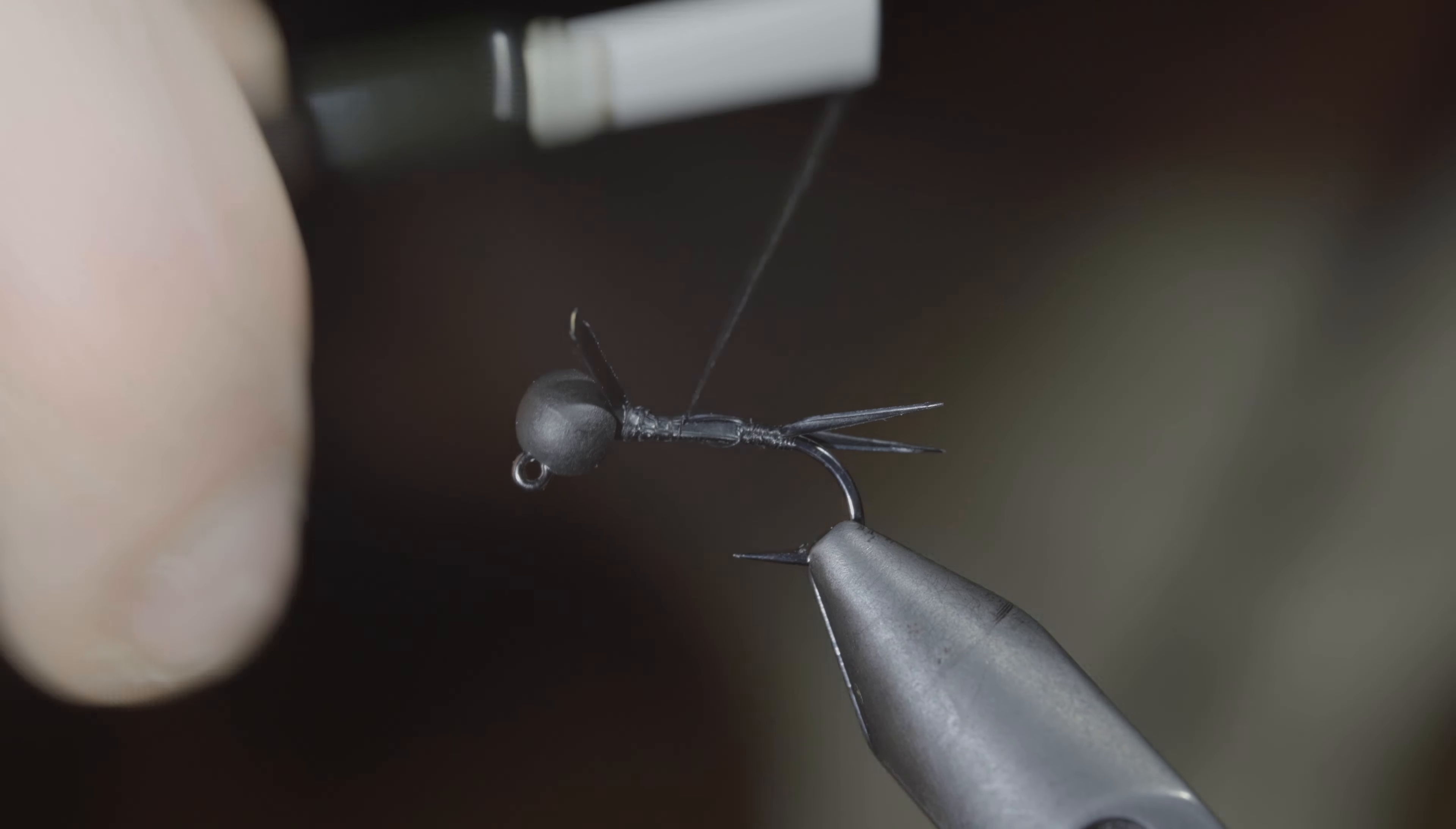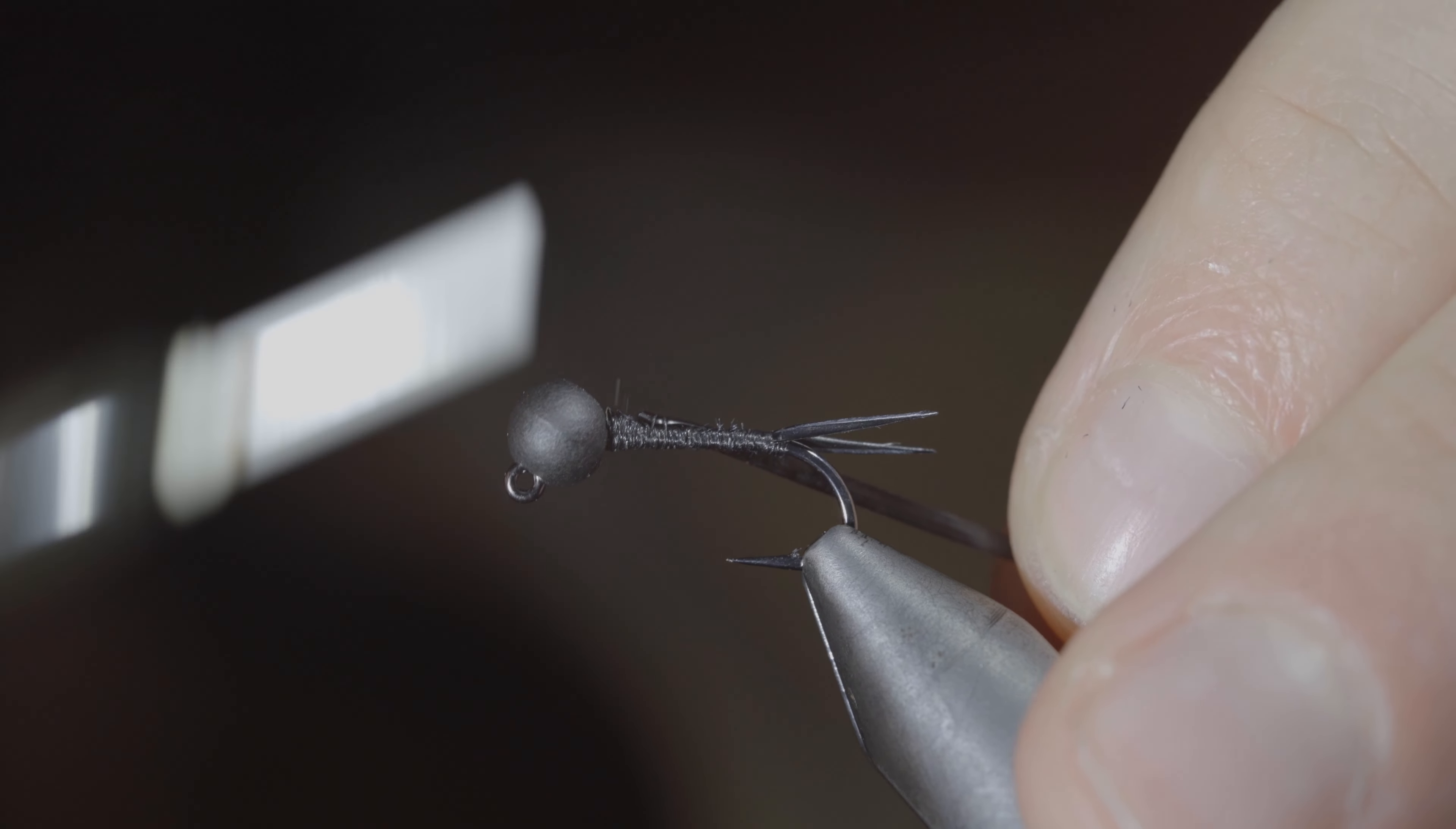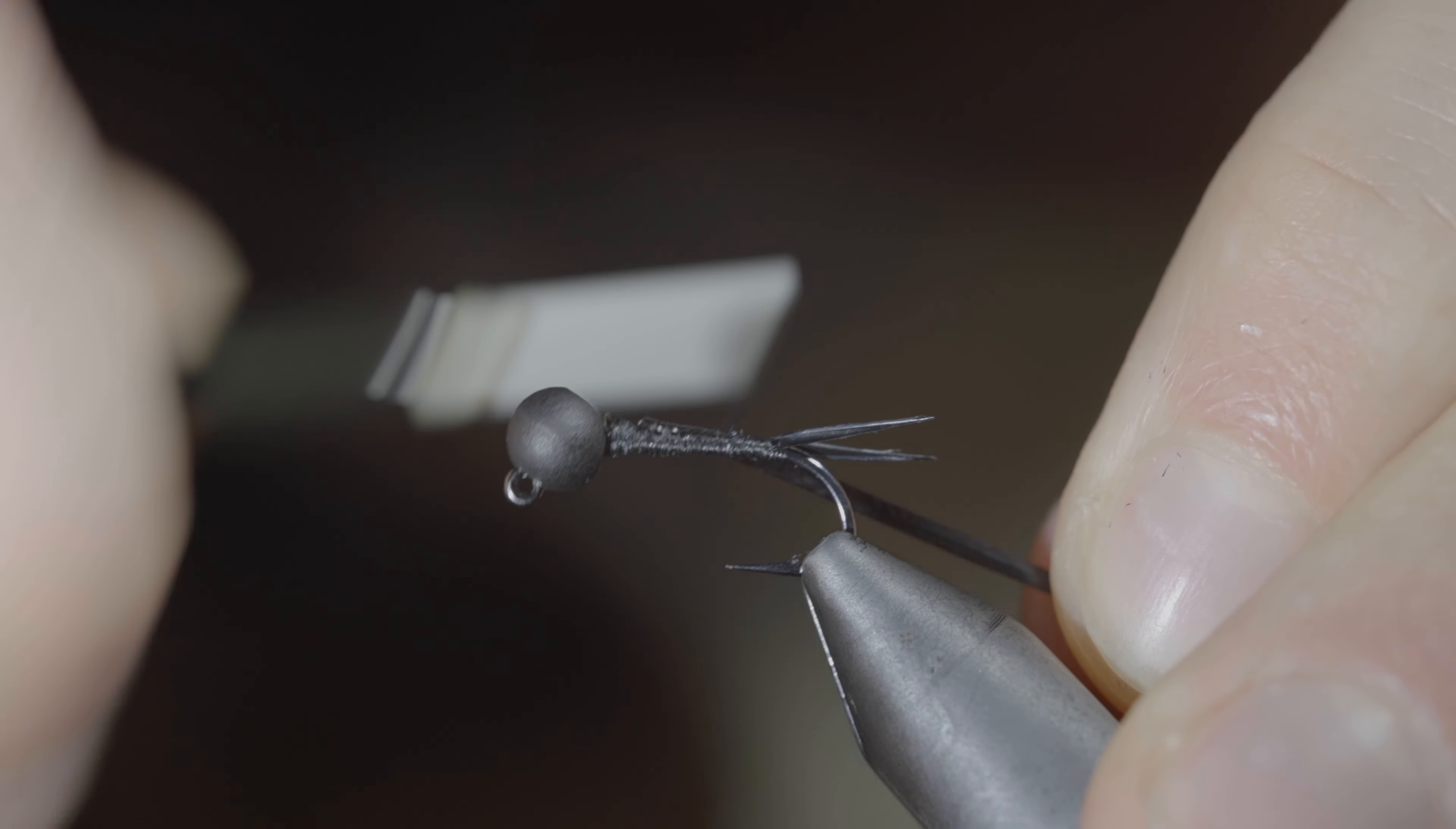Secure your tag ends and grab some vinyl ribbing. Here I'm using medium in the color black. Secure your ribbing just behind the bead, wrapping it back towards our tail, at which point we'll set it aside using our thread to build up a slight transition.